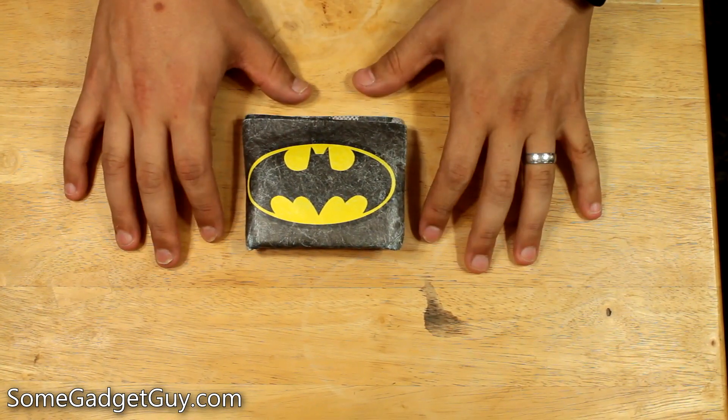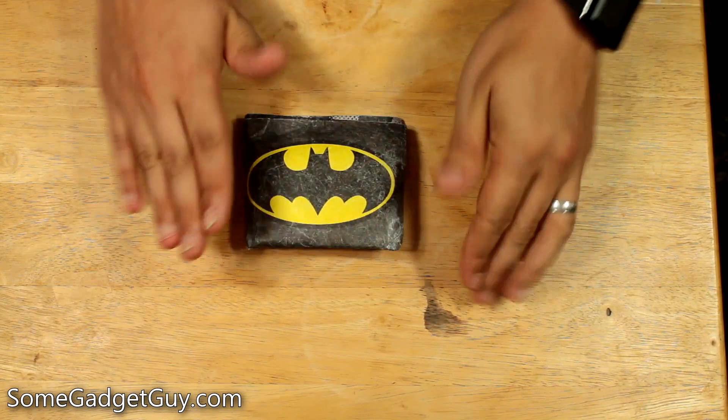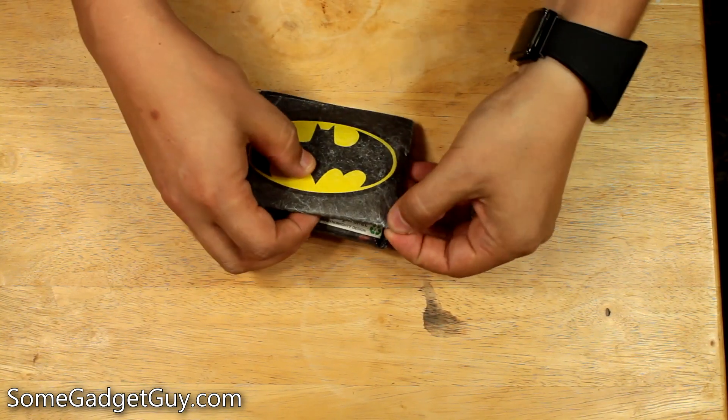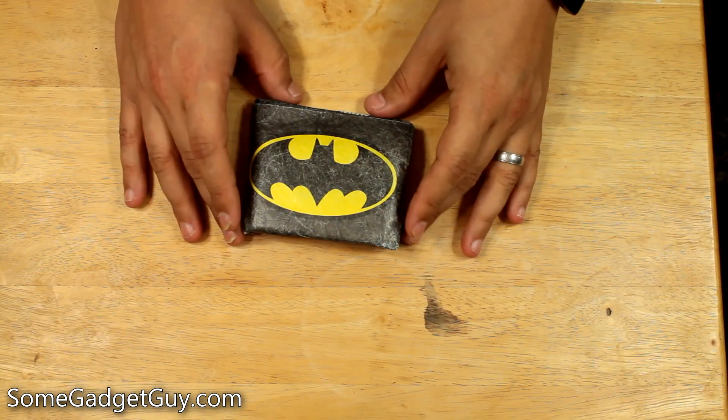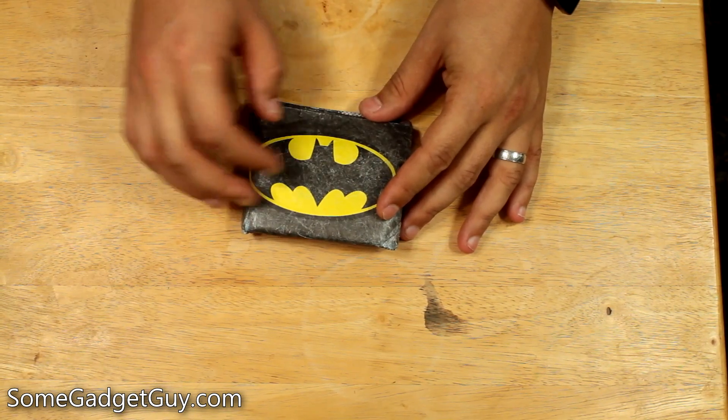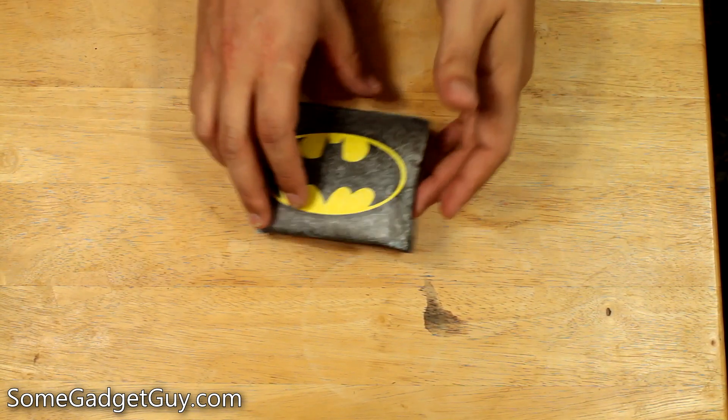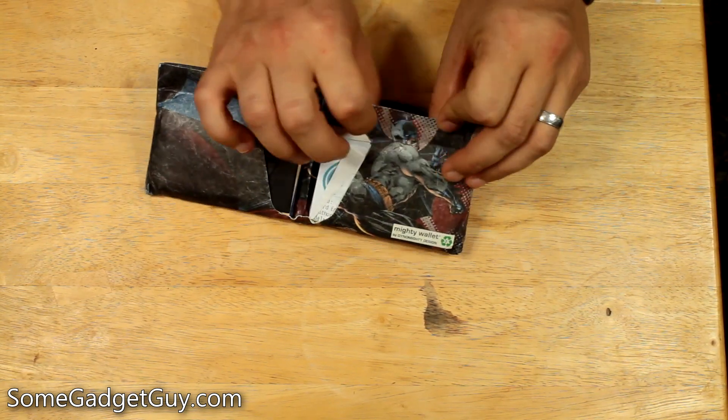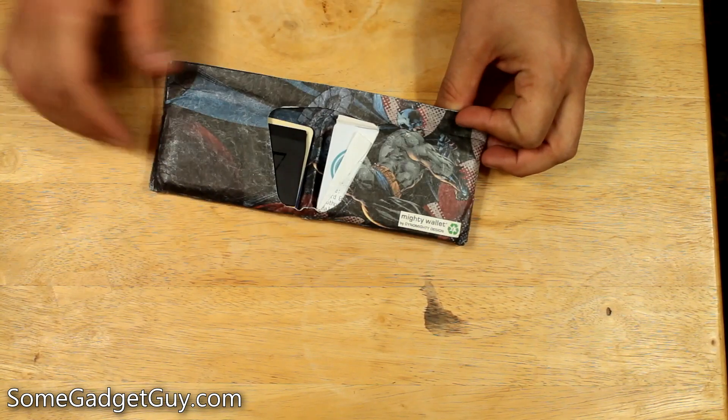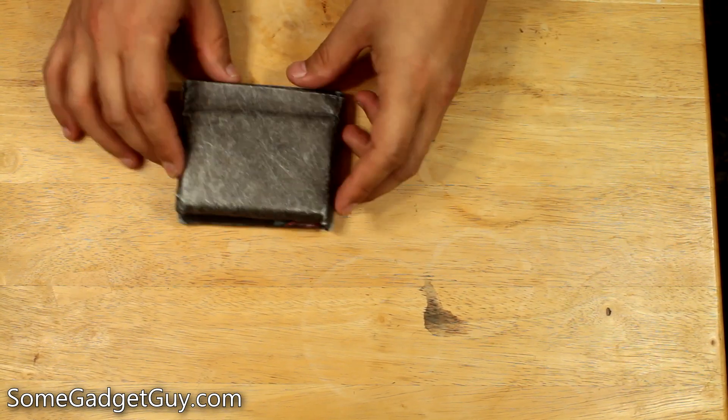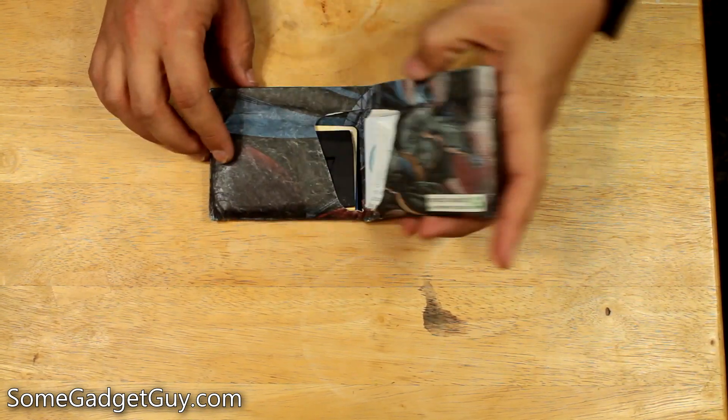So when I pulled it out of the Loot Crate to unbox it, it was nice and crisp and flat. All of the edges were really clean and it looked really pretty. It wasn't quite as scuffed up, but it already had sort of a worn look anyway. That was sort of the design of the wallet. And opening it up, you can see the Batman comic book panel, that little pointillism stuff going on right there.